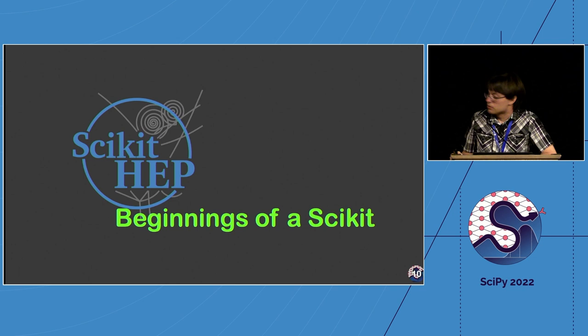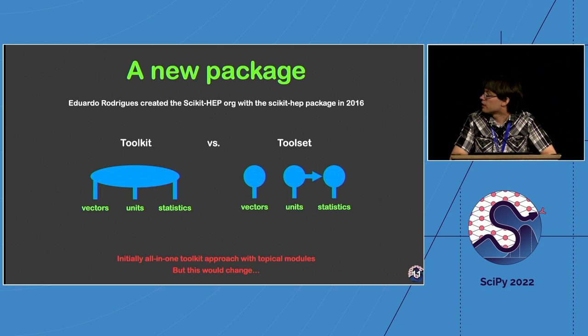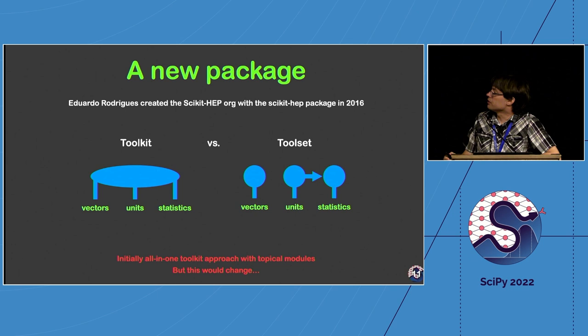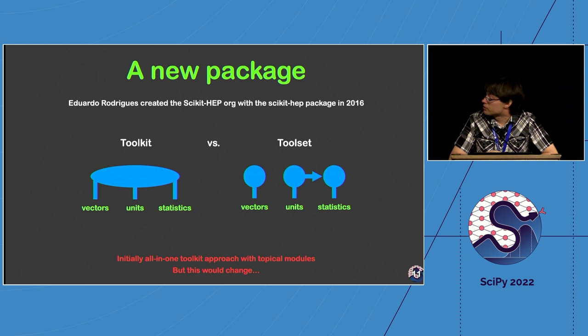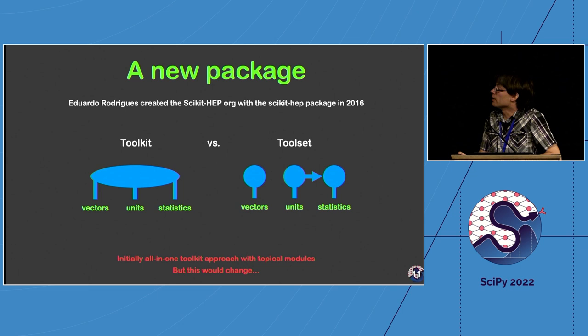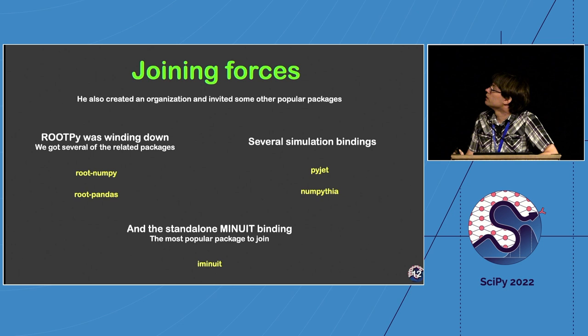Scikit-hep started out with the idea of mimicking the toolkit idea from ROOT. There was actually a package called scikit-hep containing several things like units, vectors, and statistics. But it started moving toward a toolset idea — a collection and organization of different packages that each provide a very specific need and work well together.